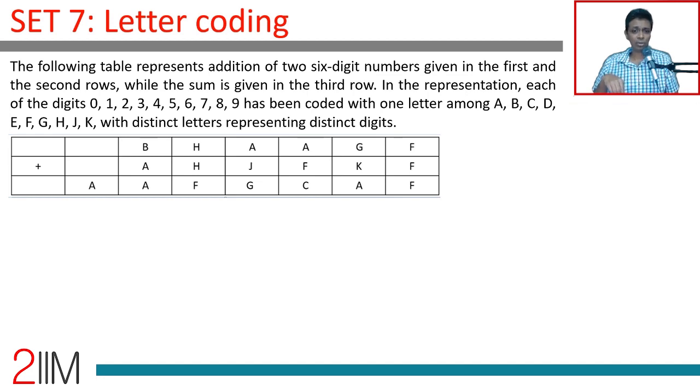The following table represents the addition of two six-digit numbers given in the first and second rows while the sum is given in the third row. In the representation each of the digits 0, 1, 2, 3, 4, 5, 6, 7, 8, 9 has been coded with one letter among A, B, C, D, E, F, G, H, J, K, with distinct letters representing distinct digits.